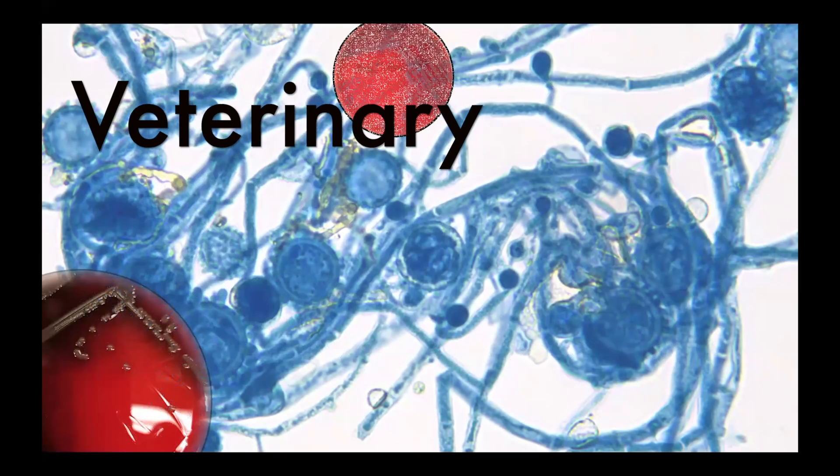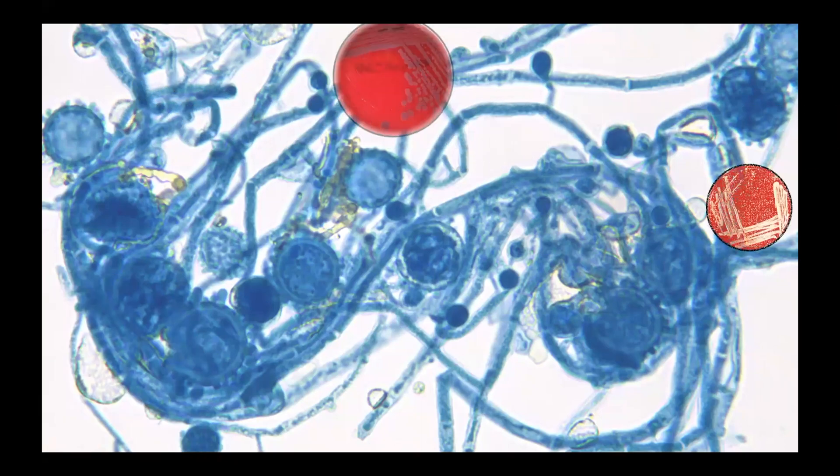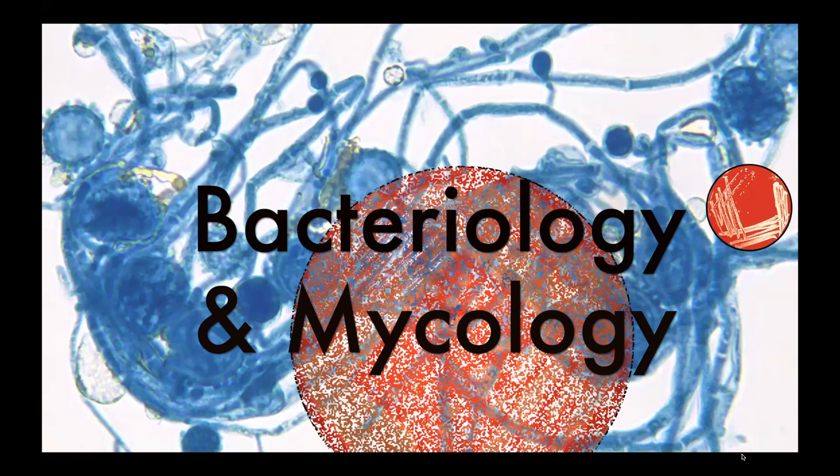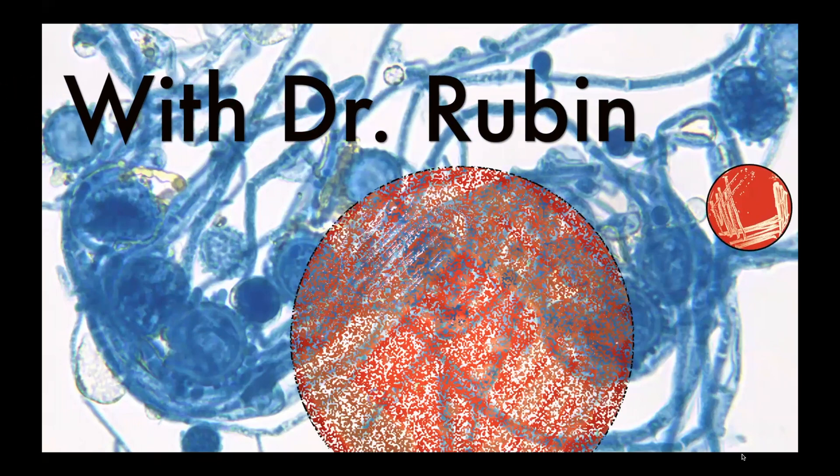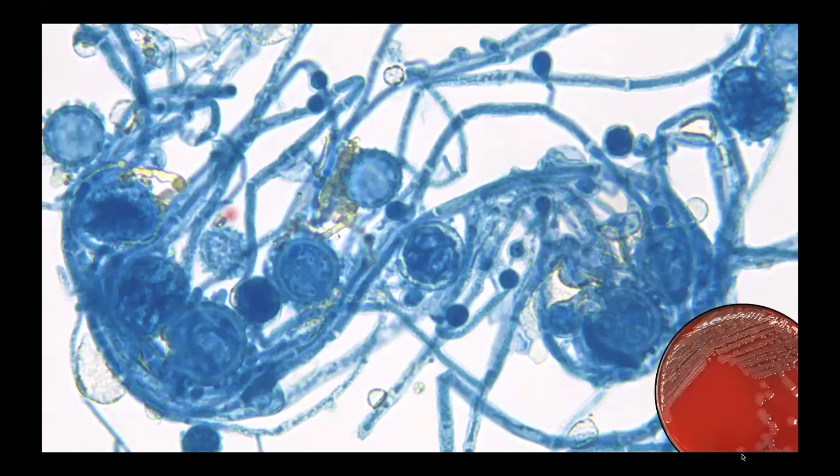In today's lecture, we'll be talking about three different genera, including one which has made a comeback as an important pathogen of pigs since the late 2000s. Our three genera today — Brachyspira, Lausonia, and Treponema — are all biocontainment level 2 organisms.